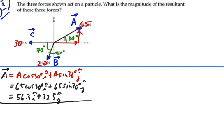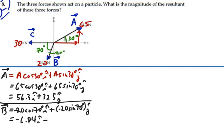Likewise, we can do the same thing with B. We have B is going to be equal to the magnitude of our vector, which will be 20. It's going to be a negative 20 cosine 70 because we're going in the negative x direction, plus a negative 20 sine 70 because we're going in the negative y direction as well. So those components are going to be equal to negative 6.84 I minus 18.8 J.